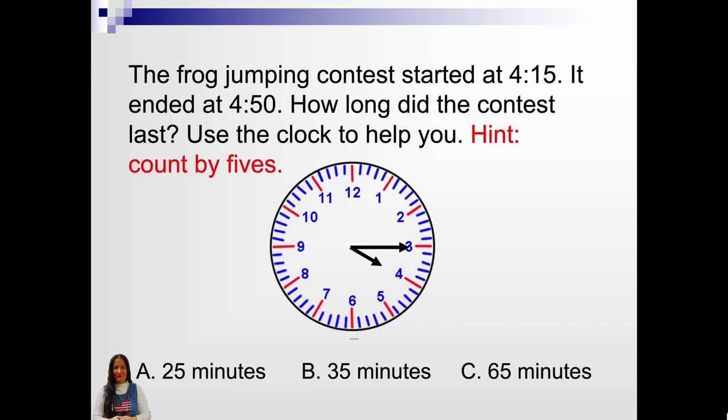The frog jumping contest started at 4:15. It ended at 4:50. How long did the contest last? Use the clock to help you. Hint. Count by fives. A. 25 minutes. B. 35 minutes. Or C. 65 minutes.